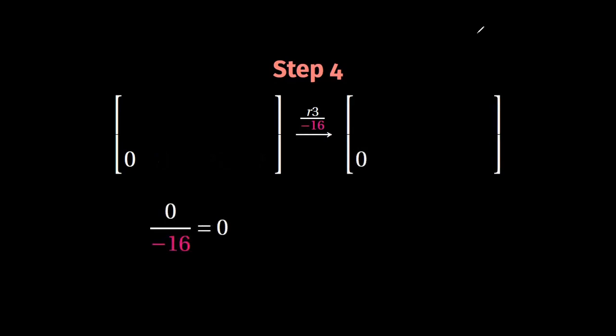So of course, zero will remain zero, zero will remain zero, we reach our element minus 16, which divided by minus 16 gives us our element one. And the last element is again, zero divided by minus 16, which is equal to zero.